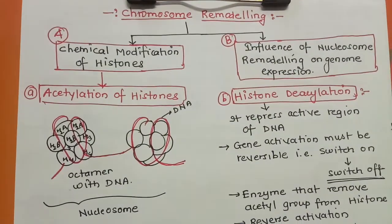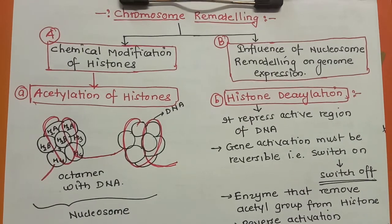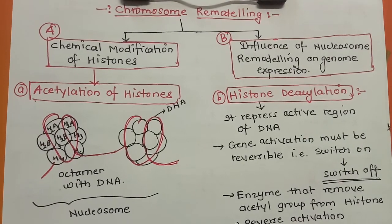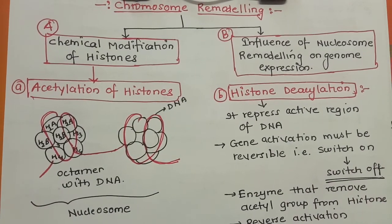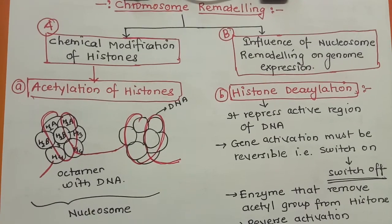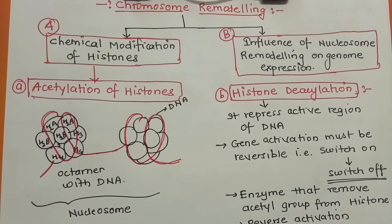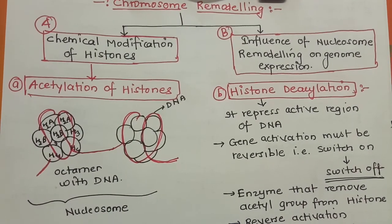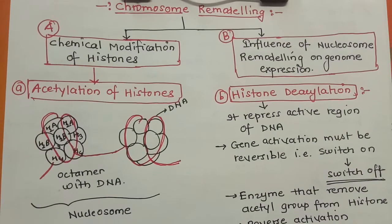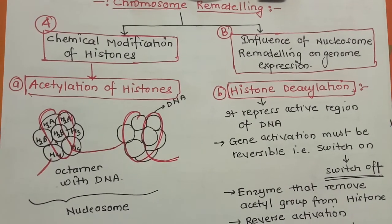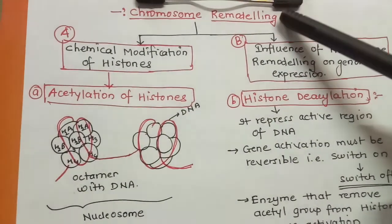Hello everyone. The next topic is chromosome remodeling. In this unit we are talking about the regulation of gene expression. Under that we have studied three different types of operon. Chromosome remodeling is also a type of regulation - for example, depending upon the body's need, a gene needs to be switched on or switched off, and for that, different mechanisms are studied under chromosome remodeling.